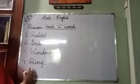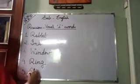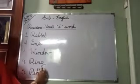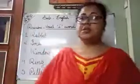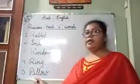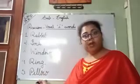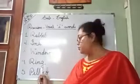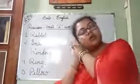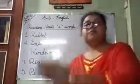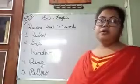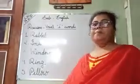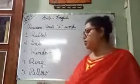Number 5. Pillow. P-I-N-L-L-O-W. Pillow. What is the spelling? P-I-N-L-L-O-W. Pillow. Pillow is the thing which we use when we are going to sleep — which we use at the time of sleeping. We put it on our head. So, this is a pillow.